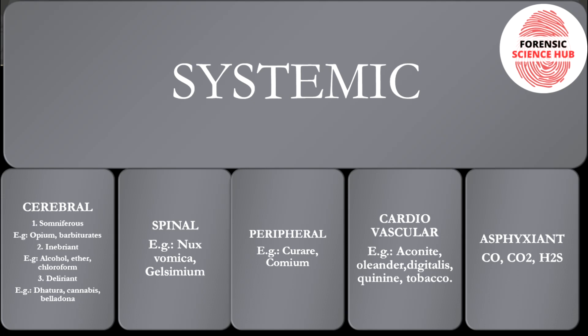Then we have systemic poisons. These are poisons that specifically affect certain portions of your body: cerebral, spinal, peripheral, cardiovascular, and asphyxiant. Poisons that affect the cerebral region are of three types: somniferous, inebriant, and deliriant. Examples of somniferous poisons include opium and barbiturates. Inebriant poisons include alcohol, ether, and chloroform. Deliriant poisons include datura, cannabis, and belladonna.